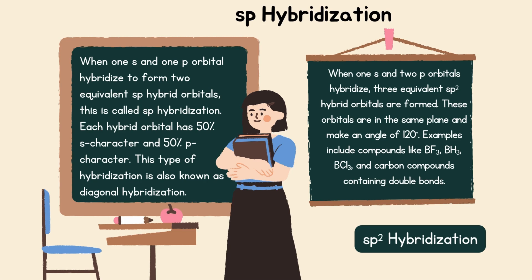Second is sp2 hybridization. When one s and two p orbitals hybridize, three equivalent sp2 hybrid orbitals are formed. These orbitals are in the same plane and make an angle of 120 degrees. Examples include compounds like BF3, BH3, BCl3 and carbon compounds containing double bonds.